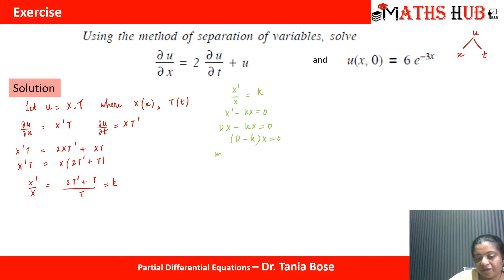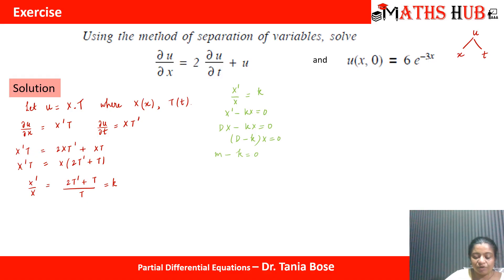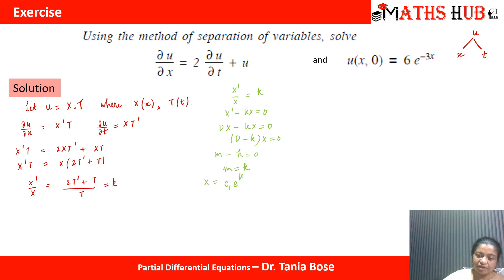For the first ODE in X, the auxiliary equation gives D - k = 0, converting to the algebraic expression m - k = 0, so m = k. Therefore, X = c1·e^(kx).